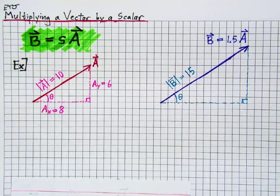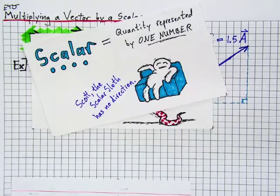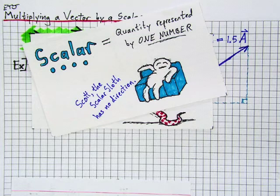What happens when you multiply a vector by a scalar? We're going to need to do just that when we get to Newton's second law of motion, so let's investigate.